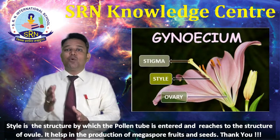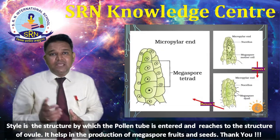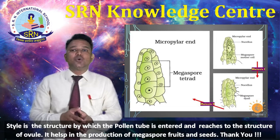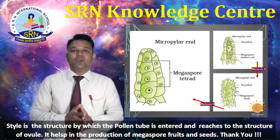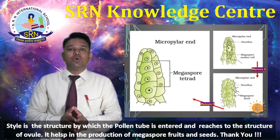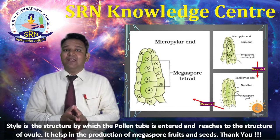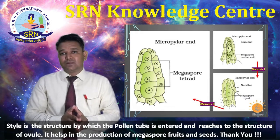The uppermost part is the stigma, on which the pollen grains land. The style is the structure through which the pollen tube enters and reaches the ovule. It helps in the production of megaspores, fruits, and seeds. Thank you.